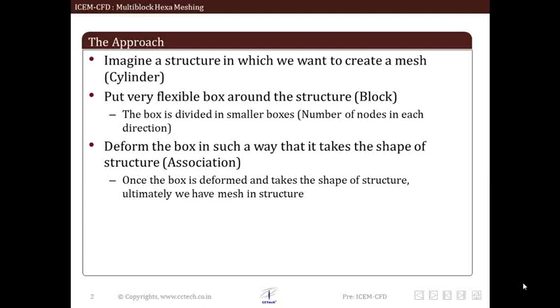Now we deform the block in such a way that it takes the shape of the cylinder. The deformation implies projection of vertices, edges and faces of block on respective entities of cylinder. This is called association. The resultant block is the cylinder itself with n number of small boxes which are hexahedrals. Thus, this is how the entire hexahedral mesh generation is done in ICMCFD.